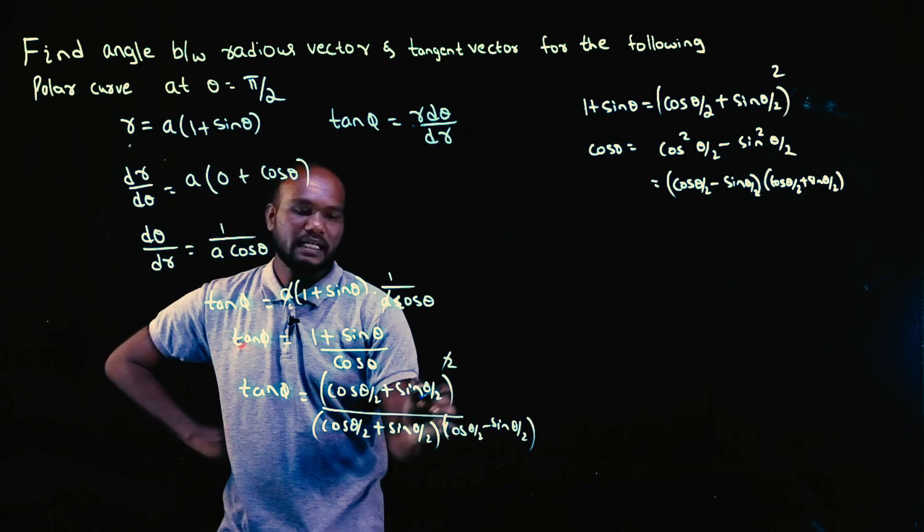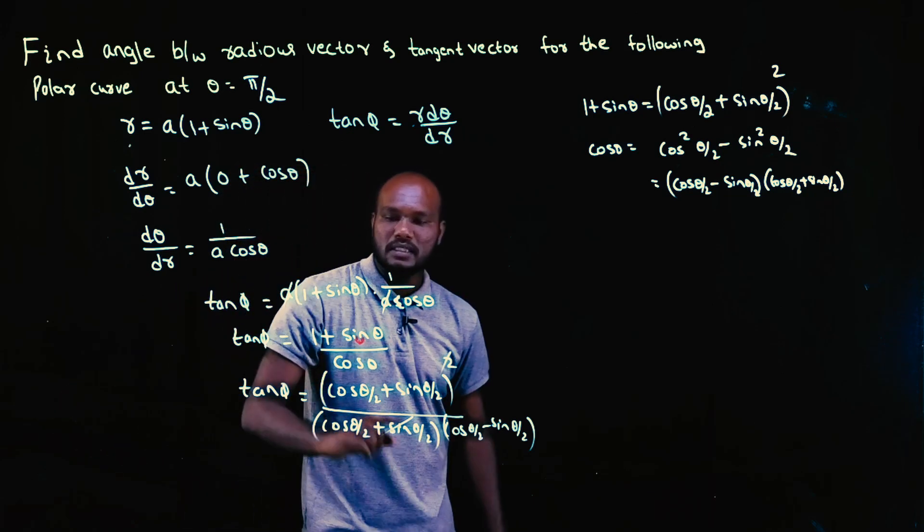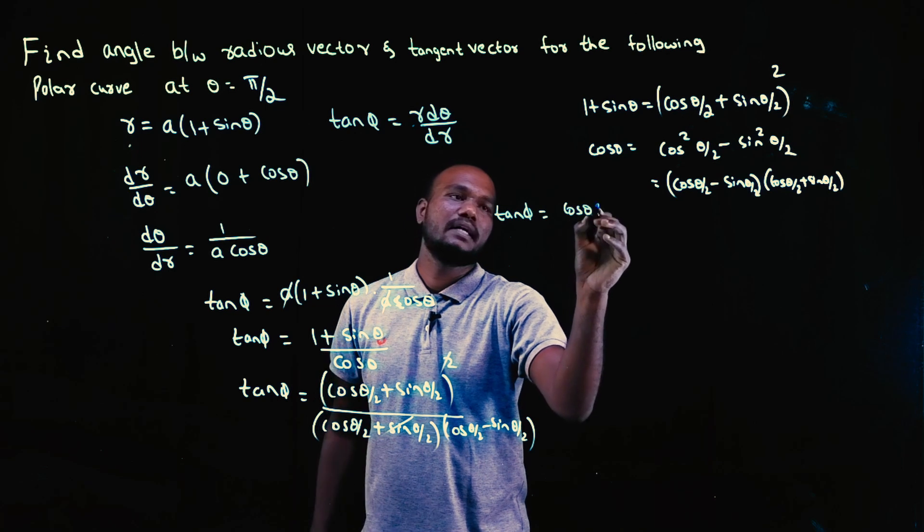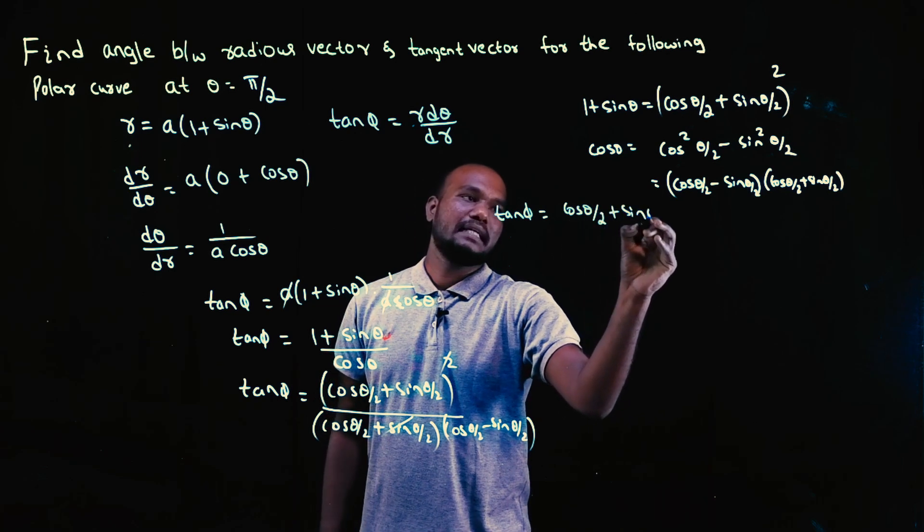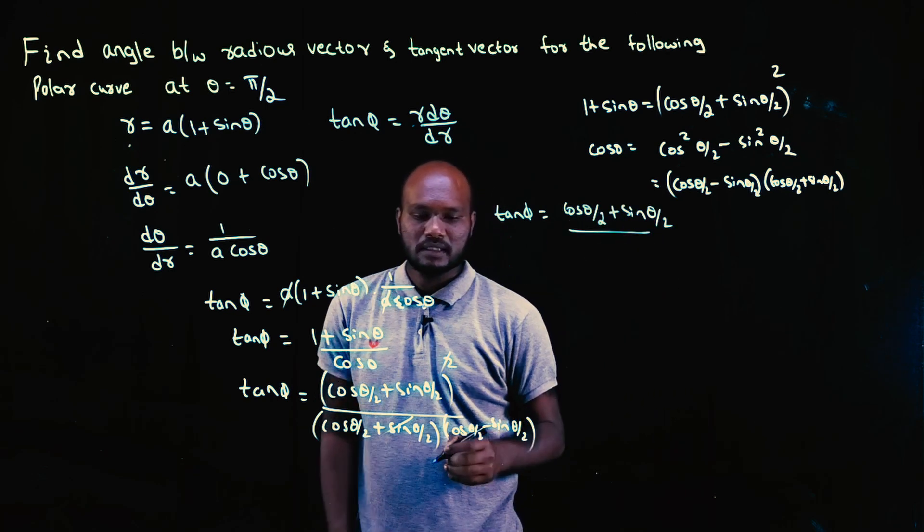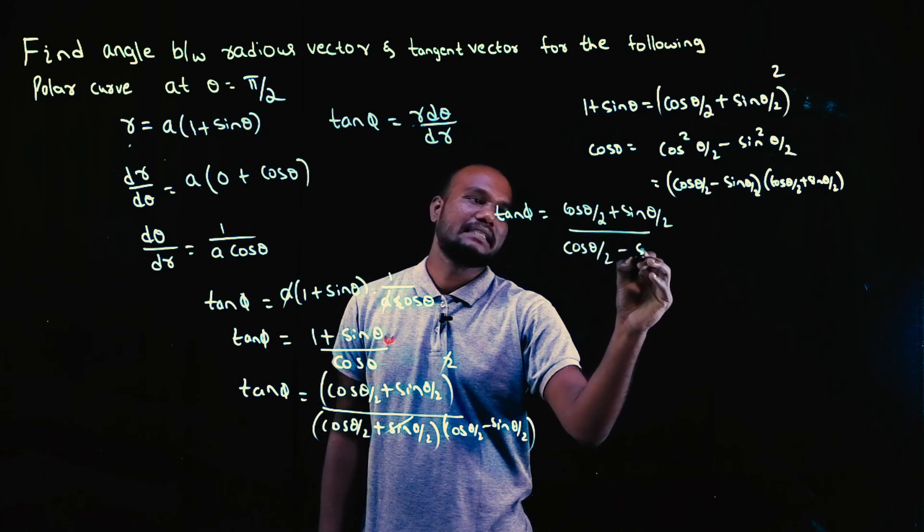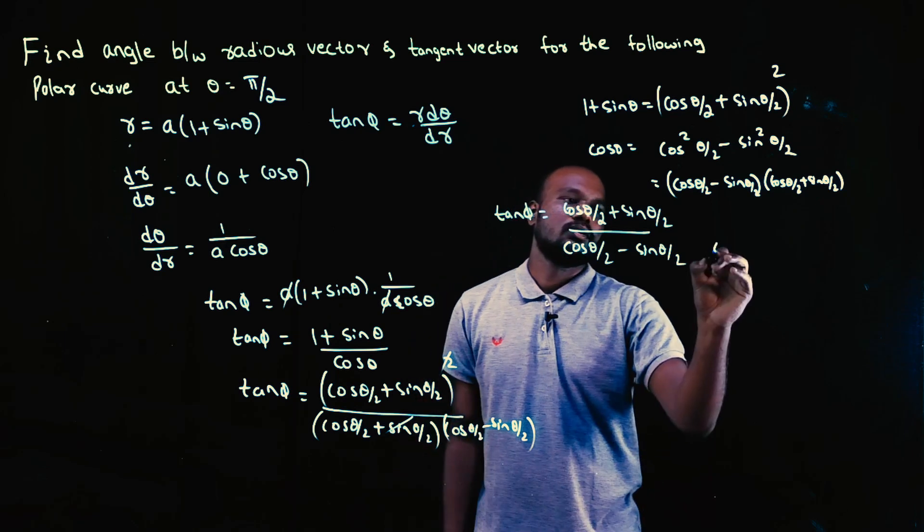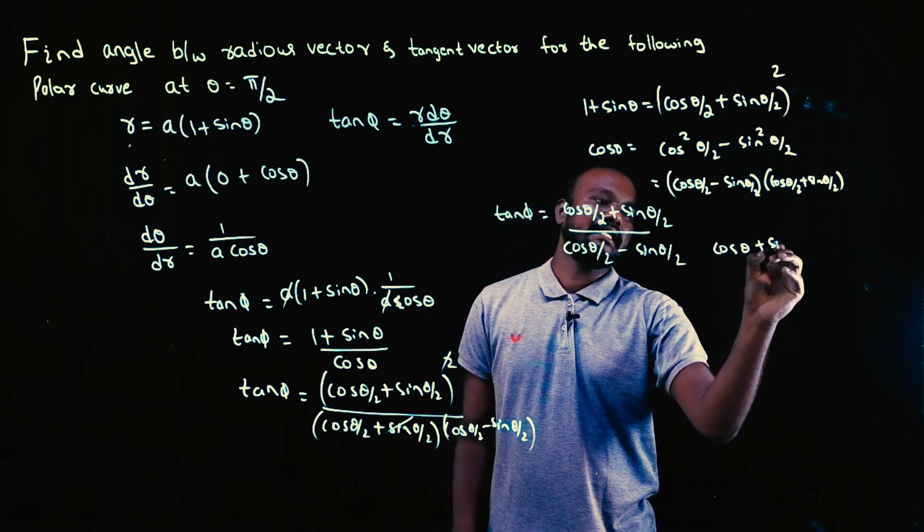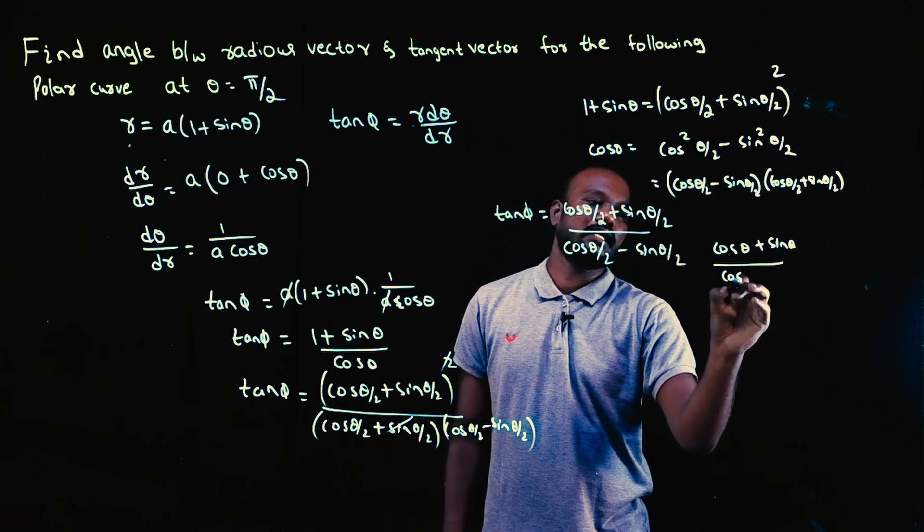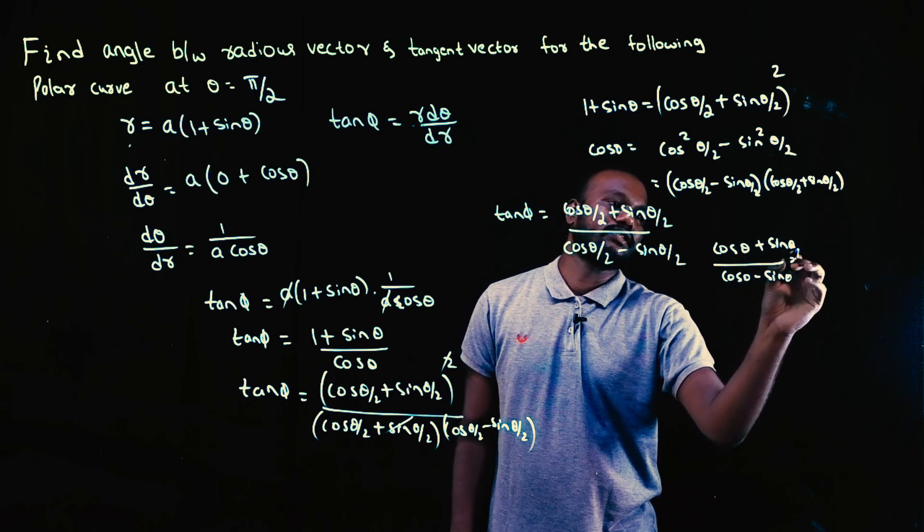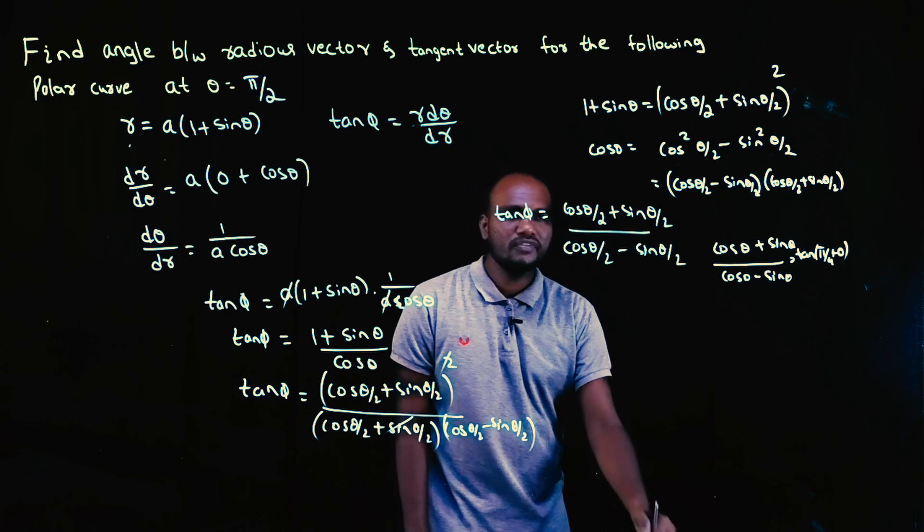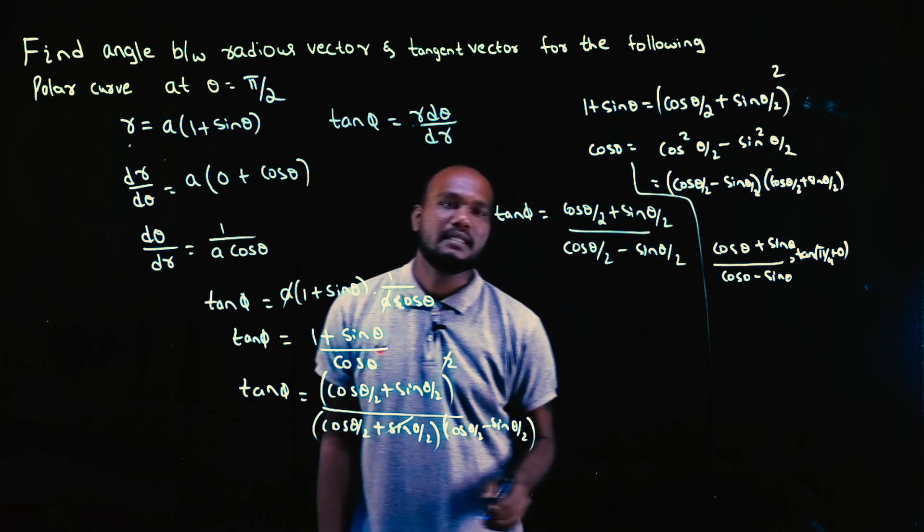Now this one and this cancel, they look similar. So tan φ value will be left with (cos θ/2 + sin θ/2)/(cos θ/2 - sin θ/2). The value is tan(π/4 + θ/2).